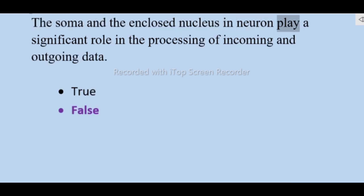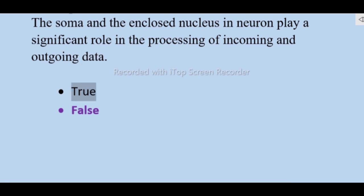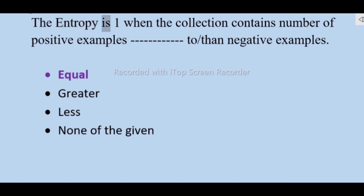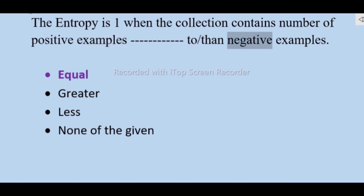The summer and the enclosed nucleus in a neuron play a significant role in the processing of incoming and outgoing data — true. The entropy is one when the collection contains a number of positive examples to negative examples — greater, less, none of the given.